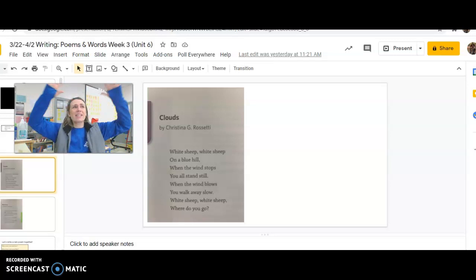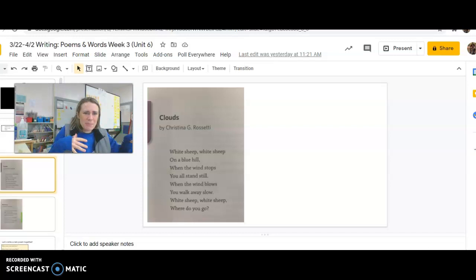And then the wind stops and they all stand still. How do clouds stand? Oh yeah, because the wind blows them and they move. So it's saying that then the wind stops and the clouds just freeze. The wind blows, you walk away slow. Do clouds really walk? No, it just means they move slowly. White sheep, white sheep, where do you go? Because sometimes the clouds then just leave the sky, right? Yeah. So what is this poem about? Clouds or sheep? It's definitely about clouds. The poet just used all these other words to describe the clouds to help you understand what it looks like.